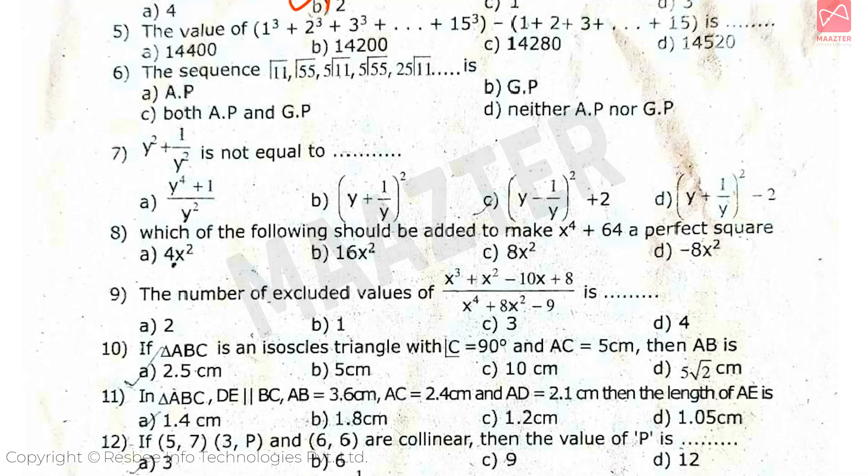Next, the value of (1³ + 2³ + 3³ + ... + 15³) - (1 + 2 + 3 + ... + 15) is, answer is Option C. Next, the sequence √11, √55, 5√11, 5√55, 25√11 is, answer is Option A.